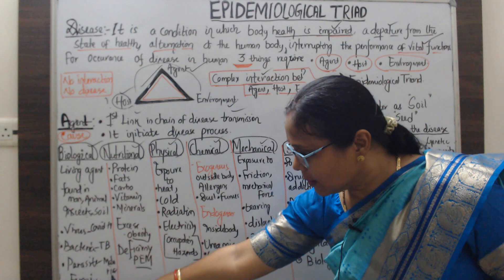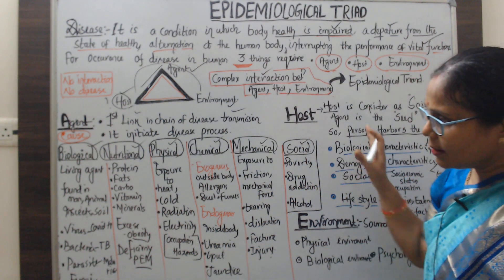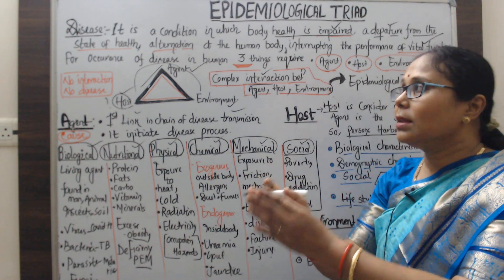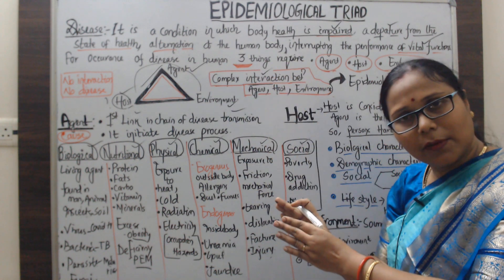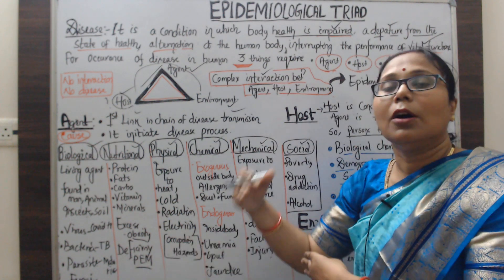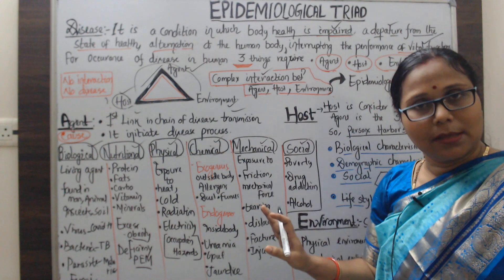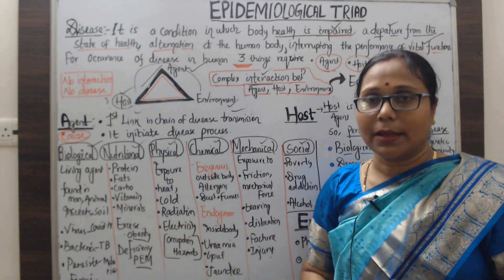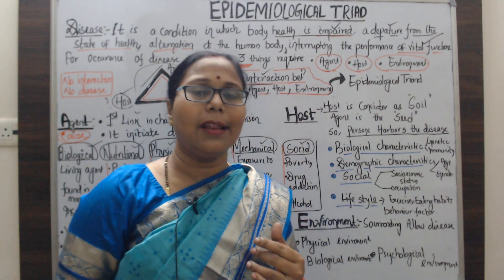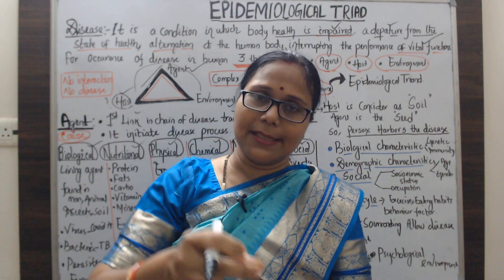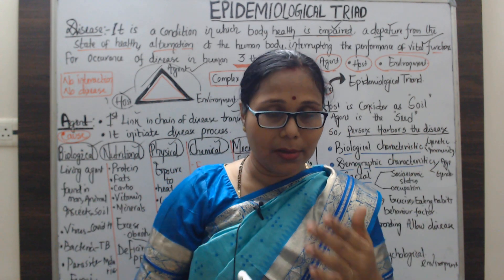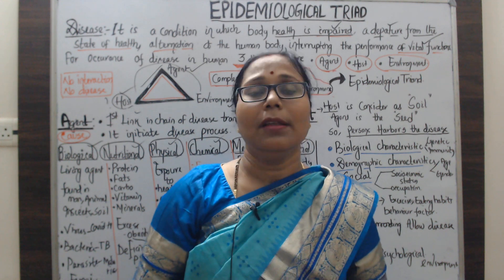So the agent may be a living or non-living thing; through these agents the body's function is impaired, the vital functions are disturbed. The agent is the first link in the chain of disease transmission. The second component is the host. In epidemiology, the host is considered as soil and the agent is the seed — just as a seed germinates when it gets nourishment from the soil.